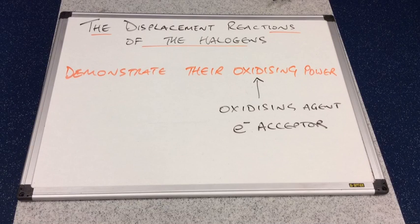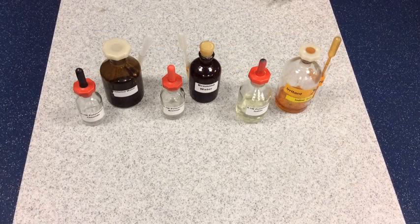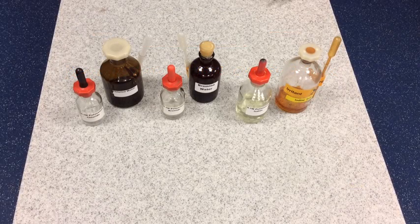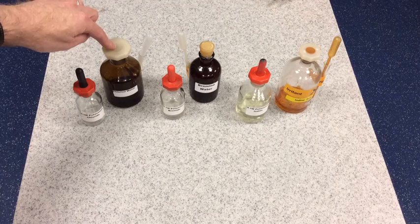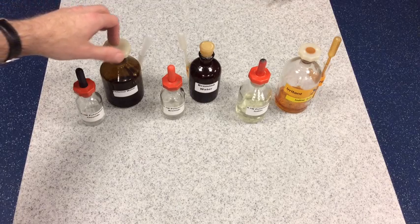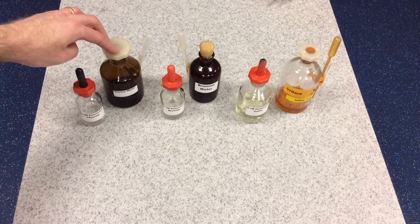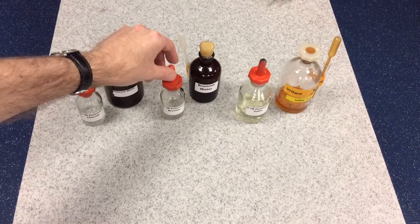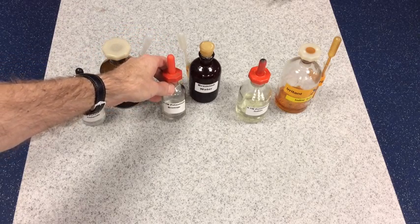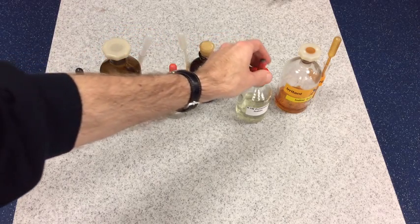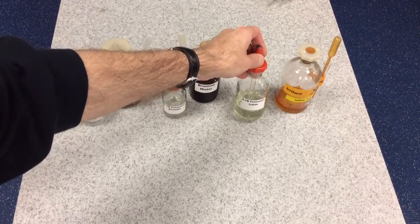Just a reminder that an oxidizing agent is an electron acceptor. In this series of reactions I'm going to video, I'm going to be taking a halogen, so this is my source of chlorine, and I'm going to react it with an aqueous halide ion. In this jar I've got bromide ions, and in this jar I've got iodide ions.